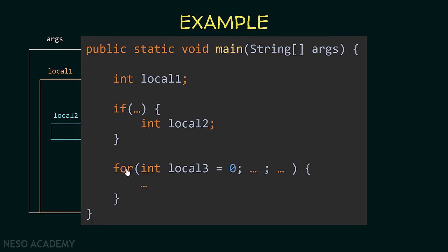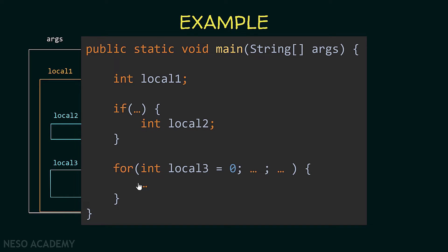Another example: suppose we have a for loop and inside it we are initializing an integer local3 which equals 0, declaring this variable to be used inside the block of the for loop. This variable can be used starting from the opening brace until the closing brace of the for loop — that is its scope. This variable cannot be used outside the for loop, above it or below it; it can be used only inside the for loop.